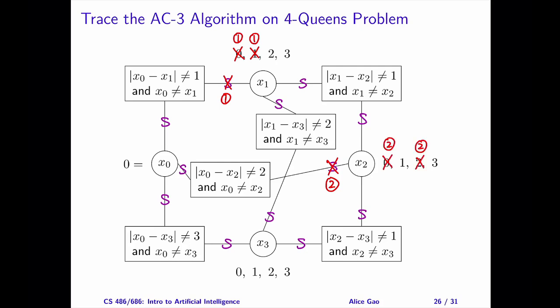Since we reduced the domain of x2, do we need to add any arcs back to the set S? There are three candidates: the arc between x0 and x2, the arc between x1 and x2, and the arc between x2 and x3. Due to the edge case, we do not add back the arc between x0 and x2, where x0 is the primary variable. We should add the other two arcs back to S. Since they are already in S, we do not need to add them again.